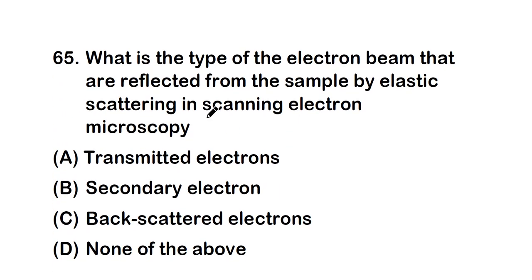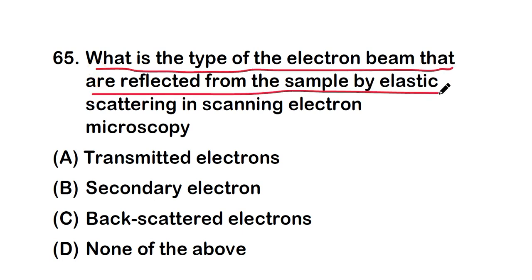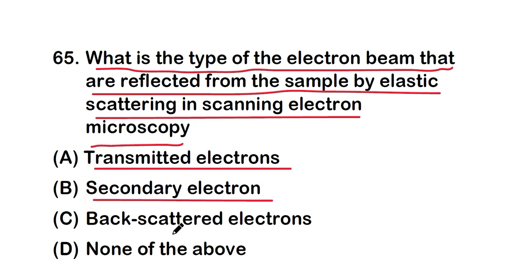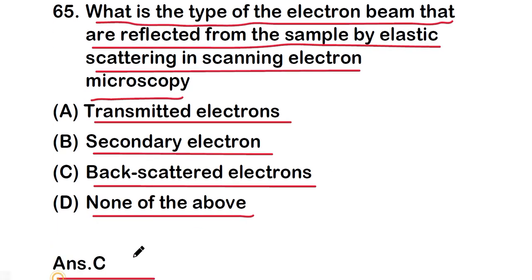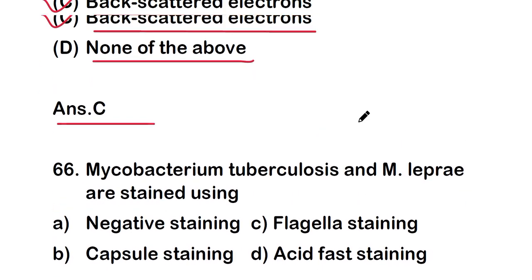Next question: what is the type of electron beam that is reflected from the sample by elastic scattering in scanning electron microscopy? The options are transmitted electrons, secondary electrons, backscattered electrons, or none of the above. The right answer is option C — backscattered electrons are the type of electron beam reflected from the sample by elastic scattering in scanning electron microscopy.